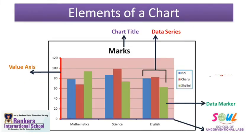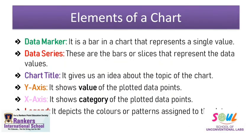The next element is legend. You may have used legends in maps — when you fill a particular pattern on a map, you indicate what that pattern represents. For example, in my chart, the blue color bars represent a particular student's marks. So we can say that legend depicts the colors or patterns which are assigned to the data series. Now these are the main elements of a chart, but there are also a few more additional components.